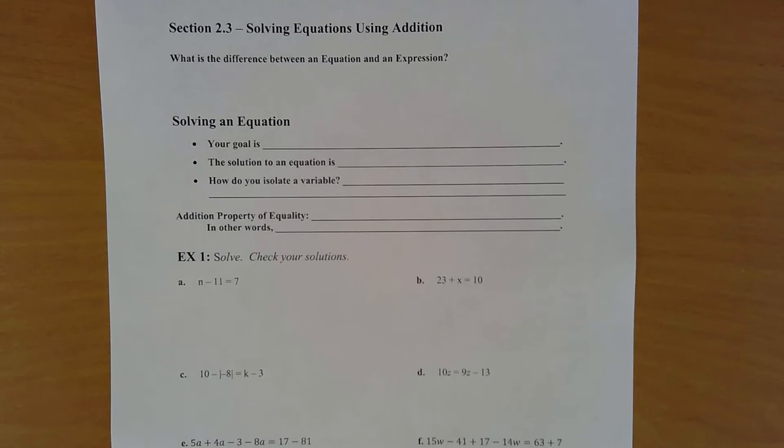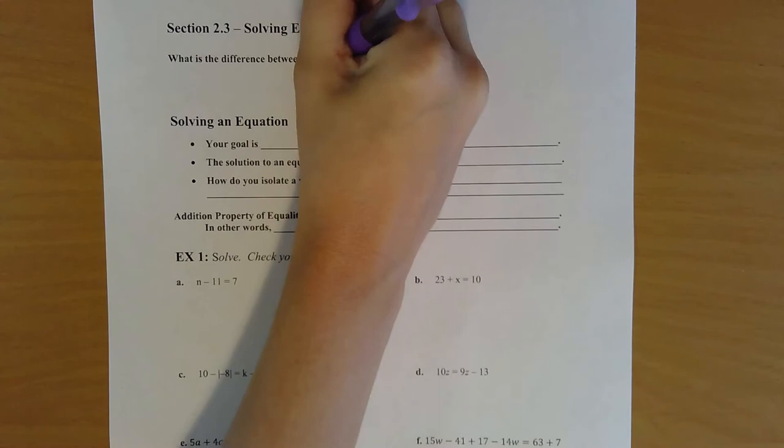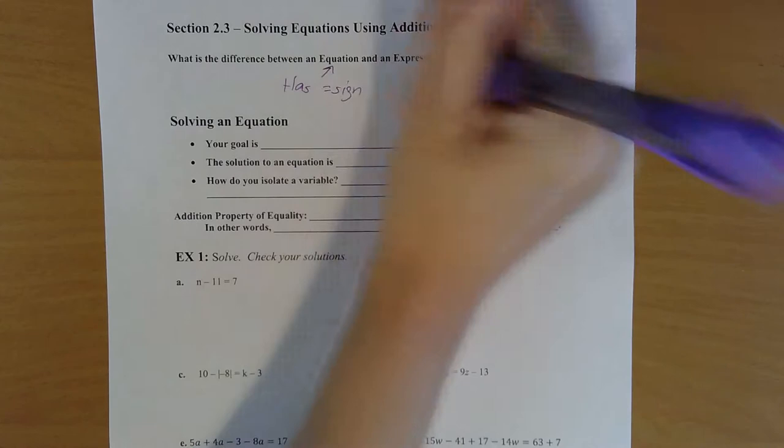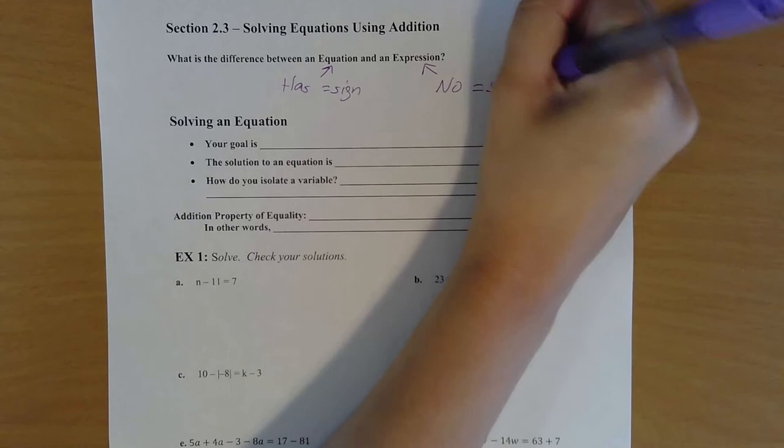Hi everybody, welcome to our section 2.3 lecture video on solving equations using addition. In this section we are switching from expressions to equations, so the first thing we should probably talk about is the difference between those things. An equation — the thing you're going to recognize visually — is that an equation has an equal sign, versus an expression does not. An expression has no equal sign, so that's the easy visual way to tell which one you have.